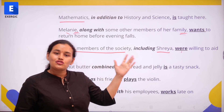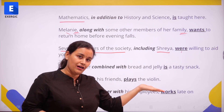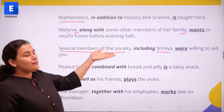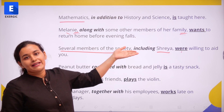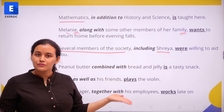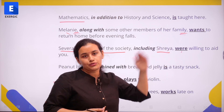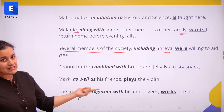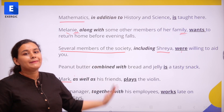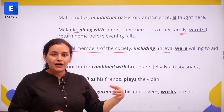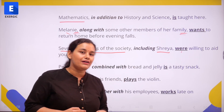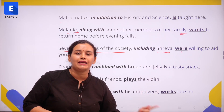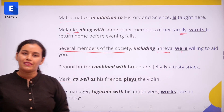Several members of the society and Shreya were willing to aid you — here the subject is already plural and remains plural with "and." Mark and his friends play the violin. The manager and his employees work late on Thursdays.